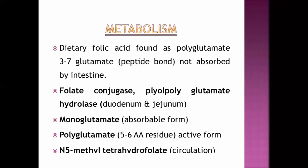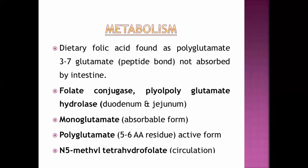When monoglutamate is formed, it is the absorbable form of folic acid. The dietary polyglutamate has a 3 to 7 glutamate peptide bond configuration. After absorption, folic acid is again re-formed into a polyglutamate compound with 5 to 6 amino acid residues and peptide bonds at positions 5 and 6. This intracellular polyglutamate form with 5 to 6 amino acid residues is the active, absorbable form used within the body.